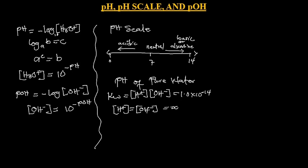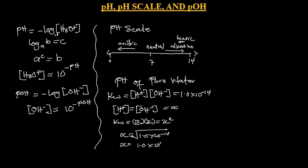In this case where they are multiplying, KW equals X times X, which gives us X squared. So if we want to find the value of X, it is the square root of 1.0 times 10 exponent minus 14. X is going to be 1.0 times 10 exponent minus 7. This is the concentration of H+ for water, and it is the same for OH−: 1.0 times 10 exponent minus 7 molar.